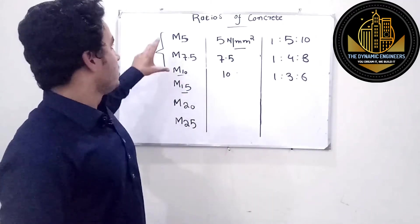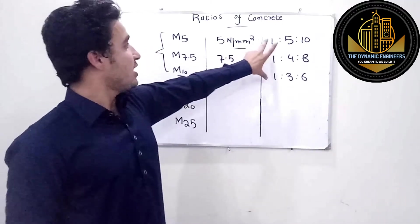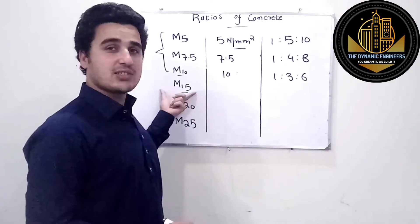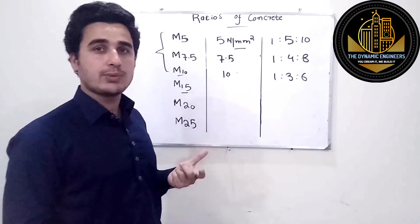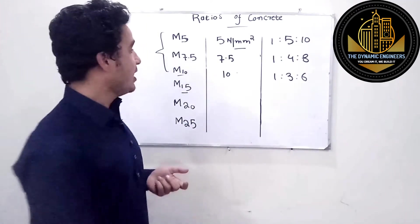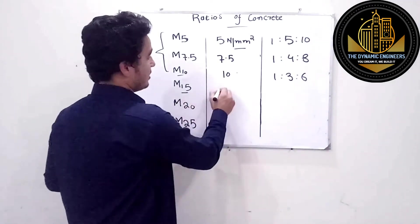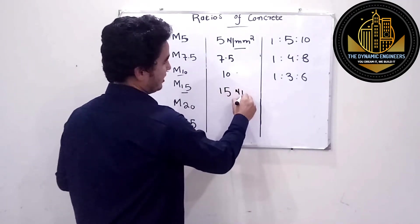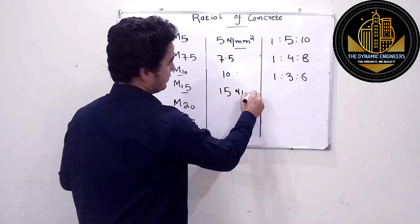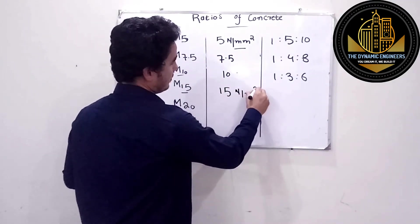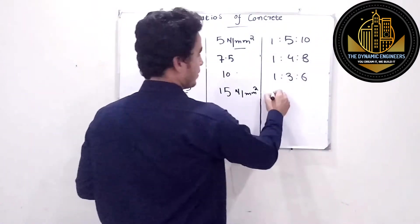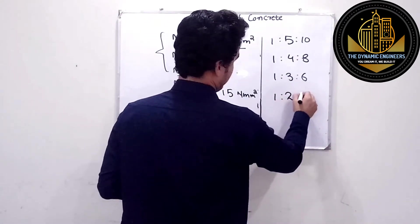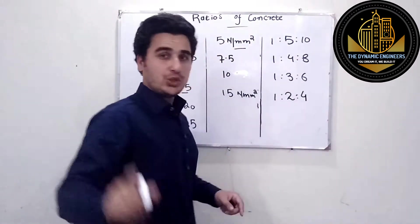Now M15 is a strength used for main structural members. Its strength is 15 Newton per millimeter square and its ratio is 1:2:4 — that is 1 unit of cement, 2 units of sand, and 4 units of aggregate.